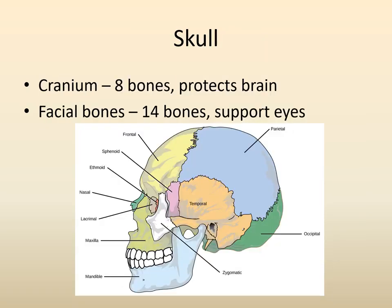We're going to start at the top and move down. The skull is composed of two divisions: the cranium and the facial bones. The cranium is composed of eight bones that protect the brain. The facial bones — there are 14 of them — form the facial structures as the name implies, and they also help to support and protect the eyes.